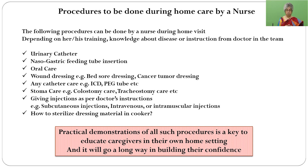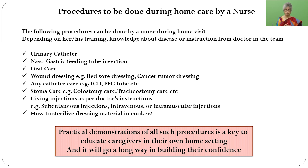Then catheter care — like intercostal drain, pack tube, etc. — stoma care, and giving injections as per the doctor's instructions. She should be able to give injections by subcutaneous, intramuscular, and intravenous routes. She should also know how to sterilize all materials used for dressing or injections at home. At home the patient may not have a sterilizer, so materials should be sterilized in a pressure cooker, and she should know that technique.